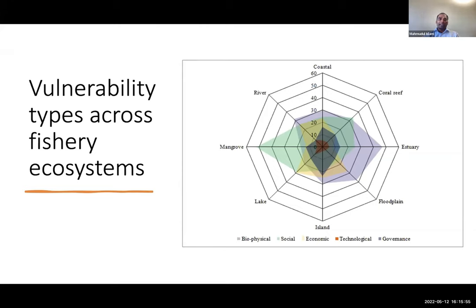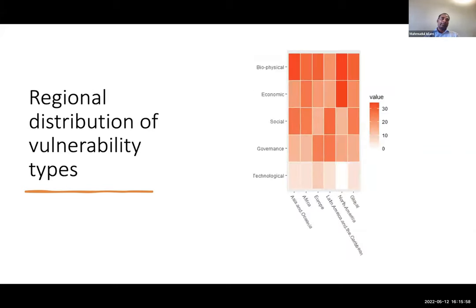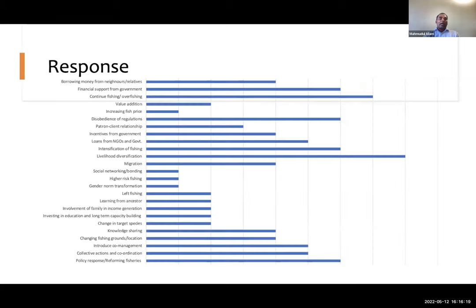We also analyzed these vulnerability types across different continents — overall global, North America, Latin America and the Caribbean, Europe, Africa, Asia, and Oceania. We identified different responses through the literature review. Those responses are categorized as short-term and long-term responses.